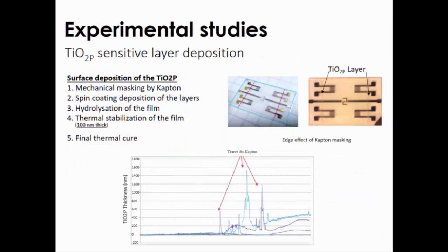With these first results, we try to see how could be the experimental studies. The deposition was made on this device. The IDT, the contacts, are masked by Kapton. After some operations to idealization and thermal stabilization, we have one nanometer thickness. Finally, a thermal cure allows us to crystallize the porous layer. Here, the first measurements show that we obtain 100 nanometers of layers.